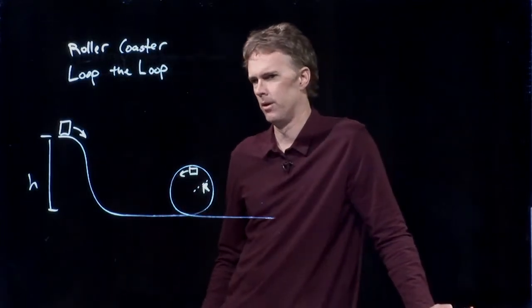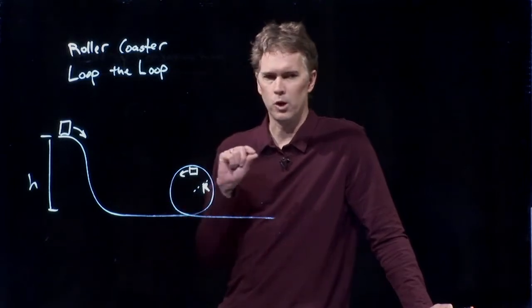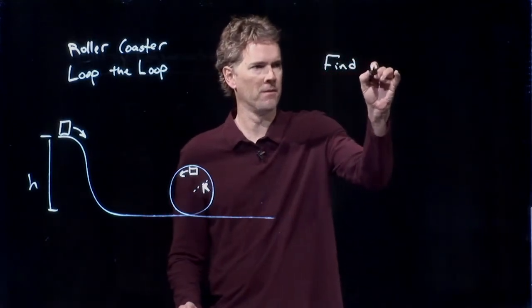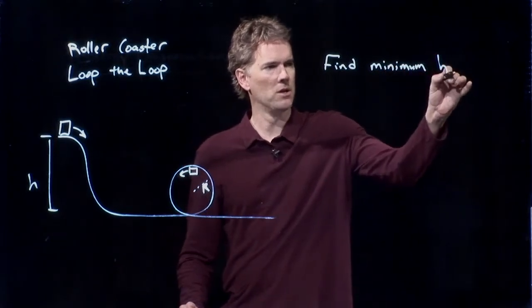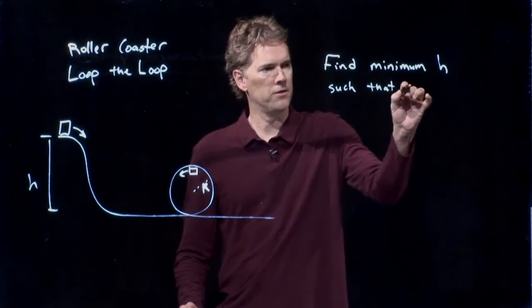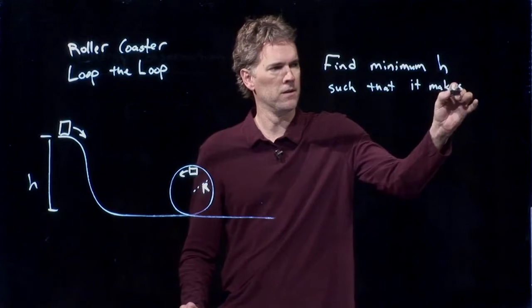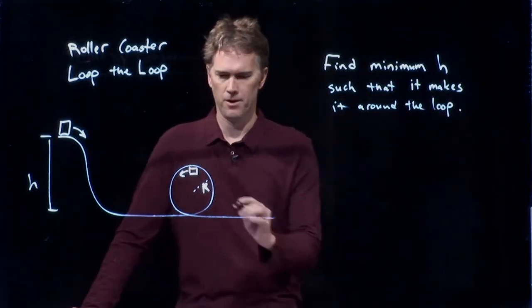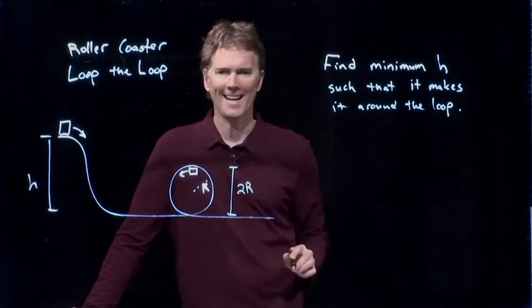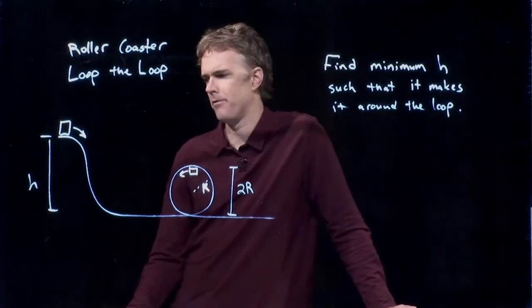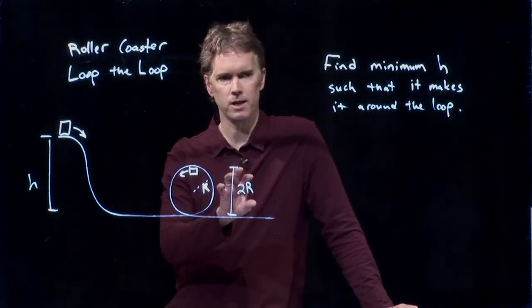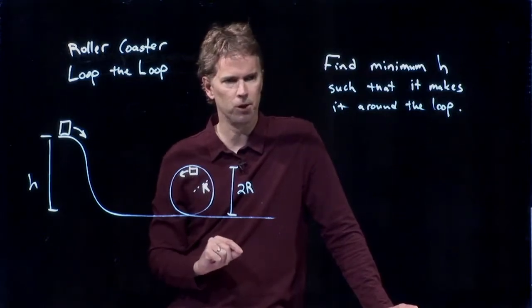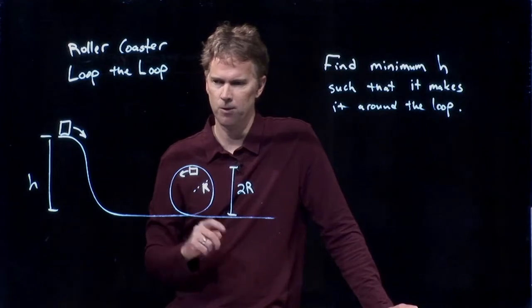Let's see if we can figure out how big it needs to be in order for this roller coaster to just make it around the loop. This is an excellent problem because it's going to incorporate some earlier stuff that we talked about with regards to circular motion. So let's find the minimum h such that it still makes it around the loop. All right, if the loop is radius r, then it is height 2r, the diameter of the thing. And right off the bat, we know that h has to be bigger than 2r. But if h is equal to 2r, does it make it around the loop? What do you guys think? Who's got the microphone? And what's your name? Nick.